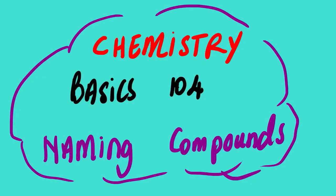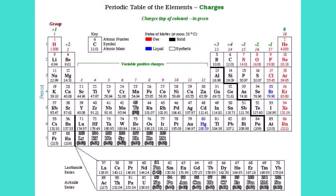Our lesson for today is chemistry, looking at basics O4. The topic is naming compounds. For this lesson you will need to use a periodic table. If you have watched lesson videos on the basics from 101 up to 103, you will know that we have what we call oxidation numbers or charges of elements on the periodic table. In group one it's 1+, group two is 2+, group three is 3+, then 4+, 3-, 2-, 1-, and zero.